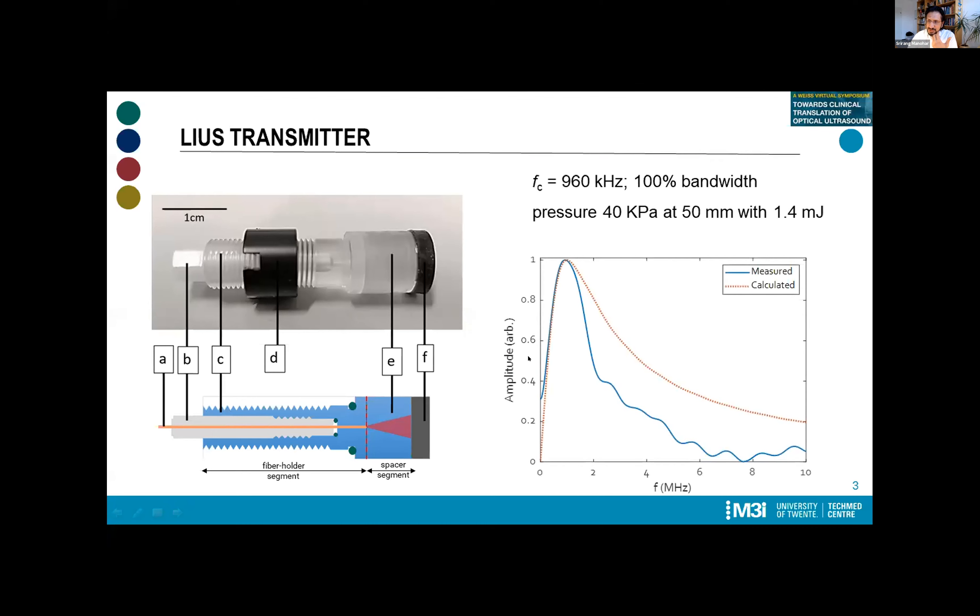What does it look like with actual signals? This is the frequency response. We managed to hit that one megahertz reasonably well with a multitude of such transmitters. The pressures that we can generate is about 50 kilopascal at 50 millimeters in water with about 1.4 millijoules per pulse. The signals are getting to look better and better, but we are still disturbed by this nuisance of a secondary peak that's a reflection of the ultrasound signal at the interface between the spacer segment and the next segment.